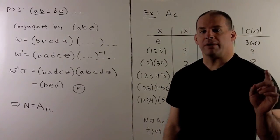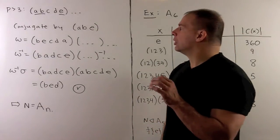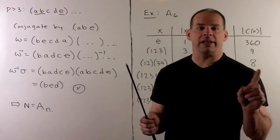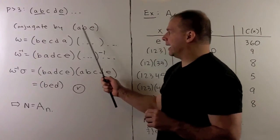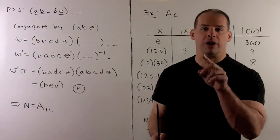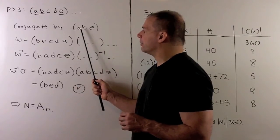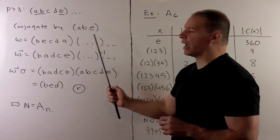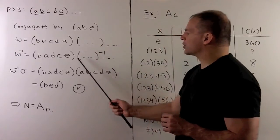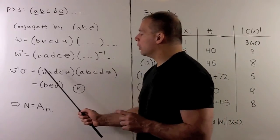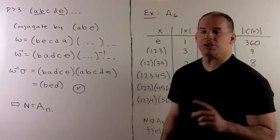Finally, consider p > 3: we have five-cycles or larger. For convenience use a five-cycle, though it works for any length. Conjugate by (A B E) — taking the first two and the last element. So A→B, B→E, E→A, and we get omega. Take omega inverse, fixing B, reversing the order, putting inverses on extra cycles, then multiply. Everything not shown cancels, leaving two five-cycles whose product is a three-cycle. So if we have a normal subgroup with any element other than the identity, we get back all of A_n.